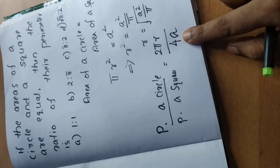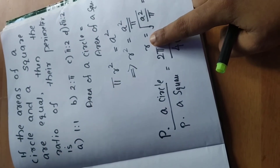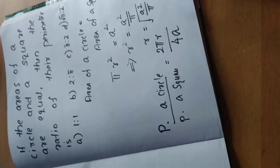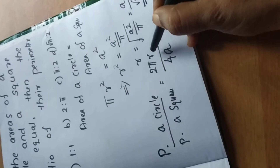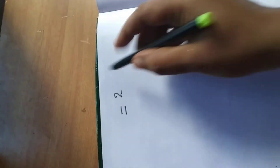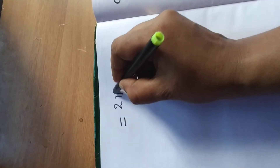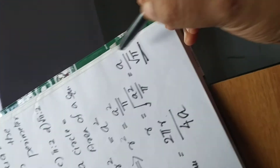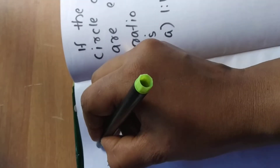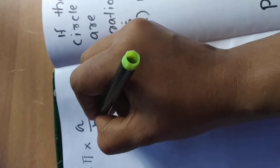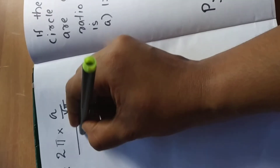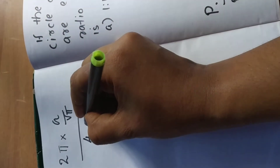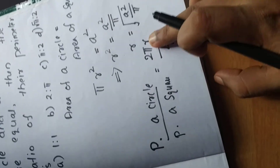So we have 2πr divided by 4a. We know r equals a/√π, so we substitute this r value here. This becomes 2π multiplied by (a/√π), divided by 4a.